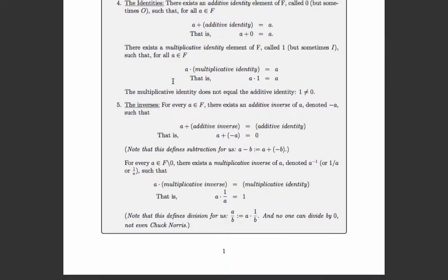In addition to identities there are inverses. The additive identity is zero, the multiplicative identity is one. For every element a in F there is an additive inverse, denoted negative a, defined such that a plus negative a equals zero — the additive identity. Now that we have this property we can define subtraction: a minus b is the same as a plus the additive inverse of b. Subtraction results from the definition of addition and additive inverse.